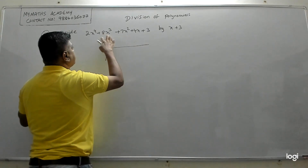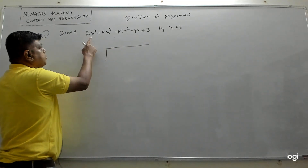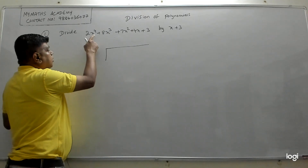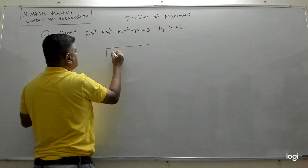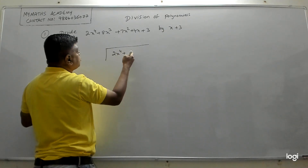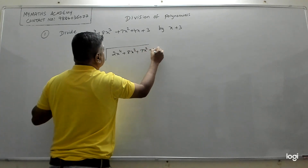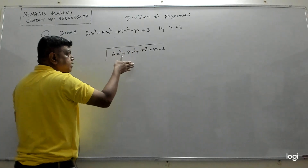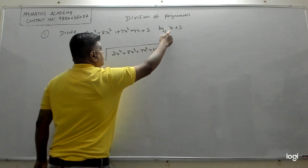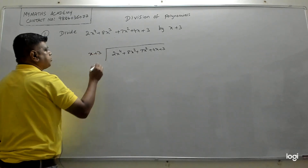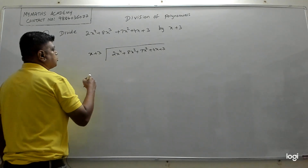When you write the polynomial inside the division, you should first write the highest power first. The highest power here is x⁴, then x³, then x², then x, then the constant. It is already in arranged form — descending powers of x. Here also arrange x + 3 in descending powers.